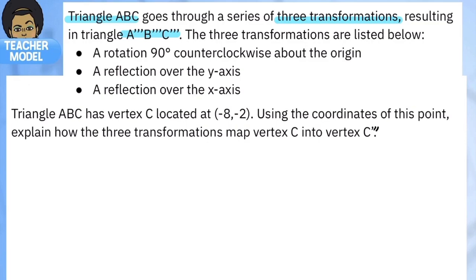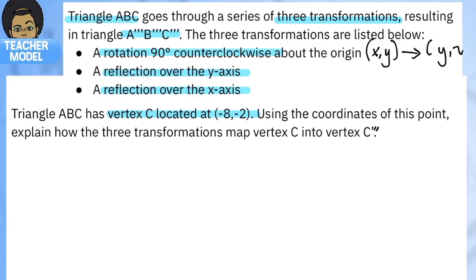Here we have triangle ABC going through a series of three transformations to get triangle ABC triple prime. Three things are happening: a rotation 90 degrees counterclockwise, a reflection over the y-axis, and a reflection over the x-axis. We're going to map out the point negative 8, 2. When something rotates 90 degrees counterclockwise, the x and y coordinates flip and the first coordinate becomes negative.